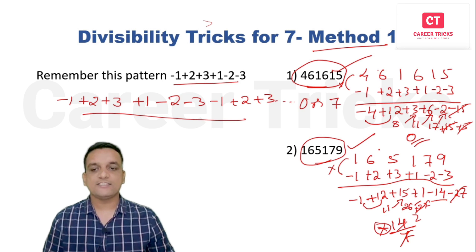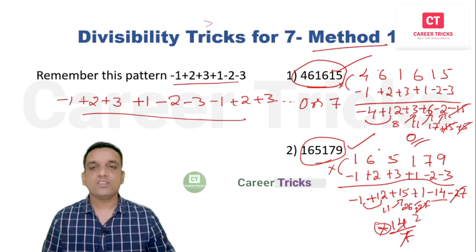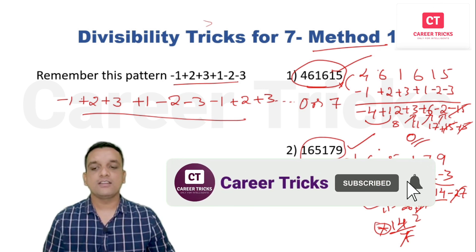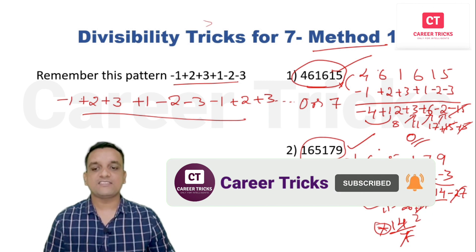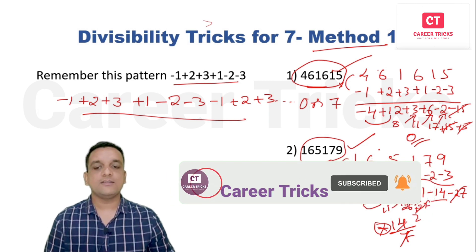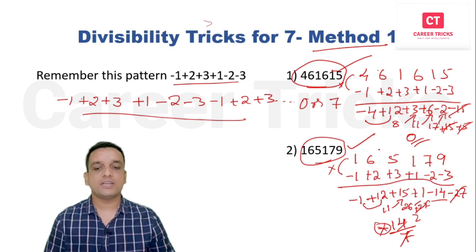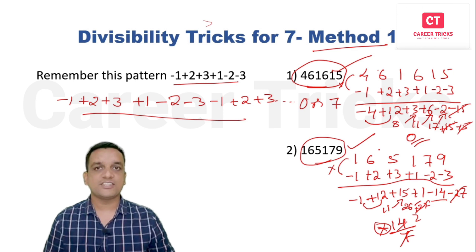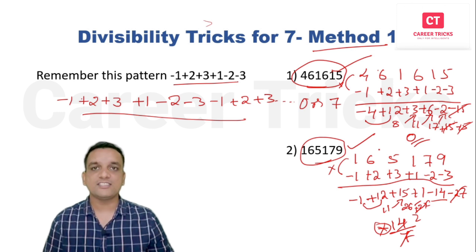To summarize the first method pattern: –1, +2, +3, +1, –2, –3, –1… and so on. For any number of digits we can solve using this pattern.